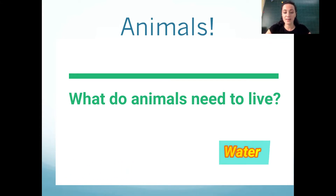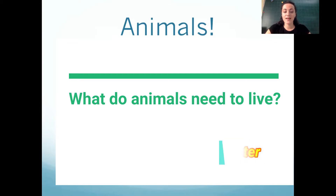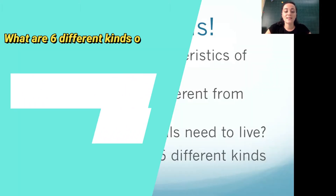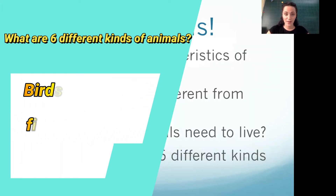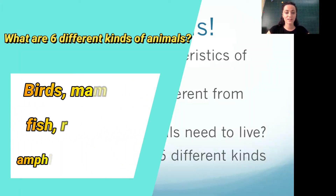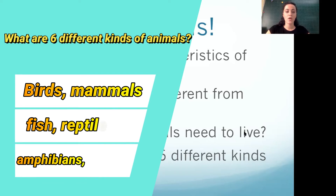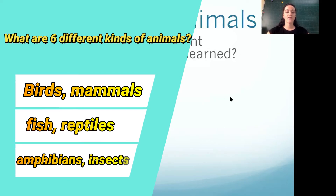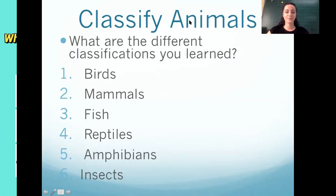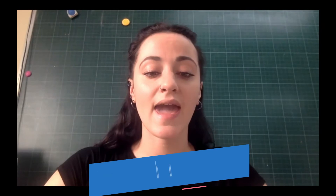What are the six different kinds of animals? We have birds, mammals, fish, reptiles, amphibians, and insects.